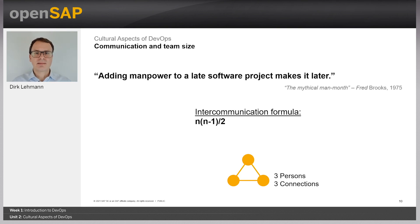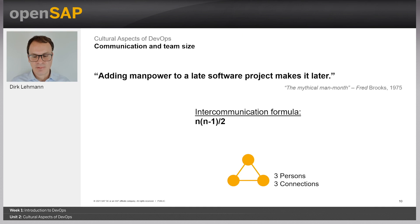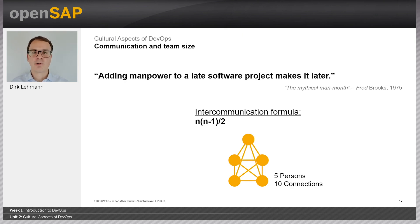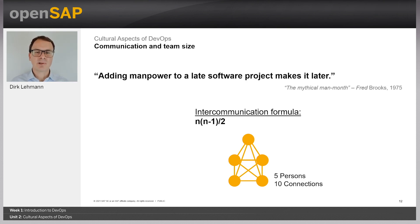If you have 10 people working on a software project and you add another 10, it's not half the time — it's most probably double the time. Why? Brooks describes the problem as mainly about communication. He presents an intercommunication formula where communication grows by the square. The more people you add, communication goes up by the square. With three persons you have three connections, four persons gives six connections, five persons gives ten connections, and so on. At some point, the communication overhead is just too high and productivity breaks down.